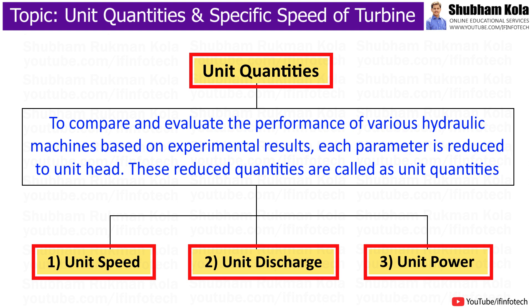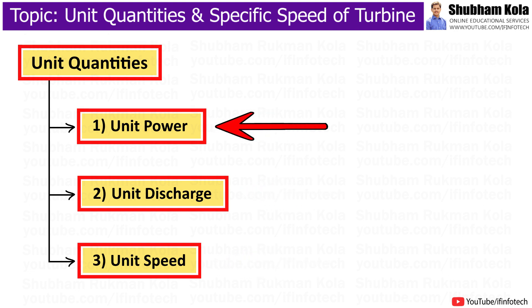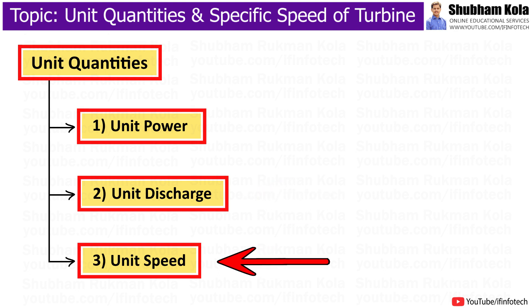Unit quantities of a turbine are certain quantities related to the turbine which are obtained when the turbine operates under unit head. While studying turbines, it is important to understand the three unit quantities. These are unit power, unit discharge, and unit speed.